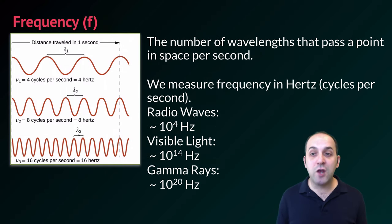Frequency is defined as the number of wavelengths that pass a point in space per second. And again, we see a huge diversity in electromagnetic waves. So radio waves have a frequency of 10 to the 4 hertz. What this means is that roughly 10,000 radio wavelengths will pass a particular point in space every second. Something like gamma rays have a wavelength of 10 to the 20 hertz, which is a huge number of wavelengths that pass a particular point in space every second.